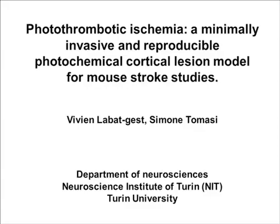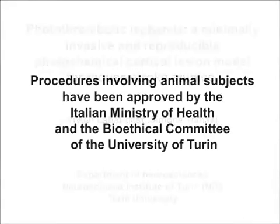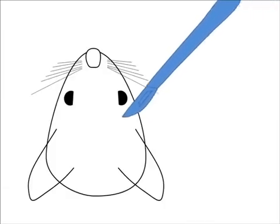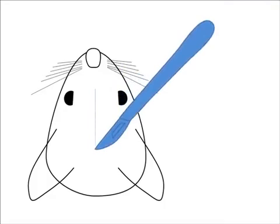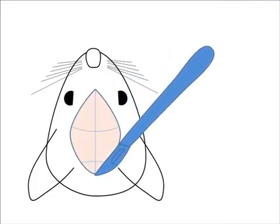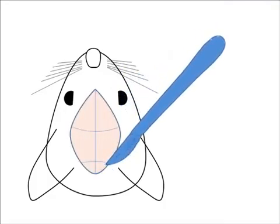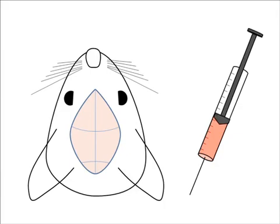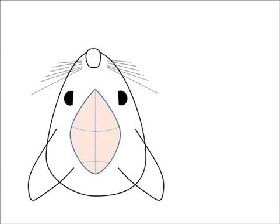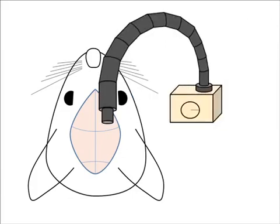The overall goal of this procedure is to induce vascular thrombosis and ischemic damage within a given cortical area by means of photoactivation of a previously injected light-sensitive dye. This is accomplished by first making an incision on the skin in order to expose the skull. After that, a photosensitive dye, rose bengal, is injected intraperitoneally. 5 minutes later, the target cortical area is exposed to a cold light source for 15 minutes.